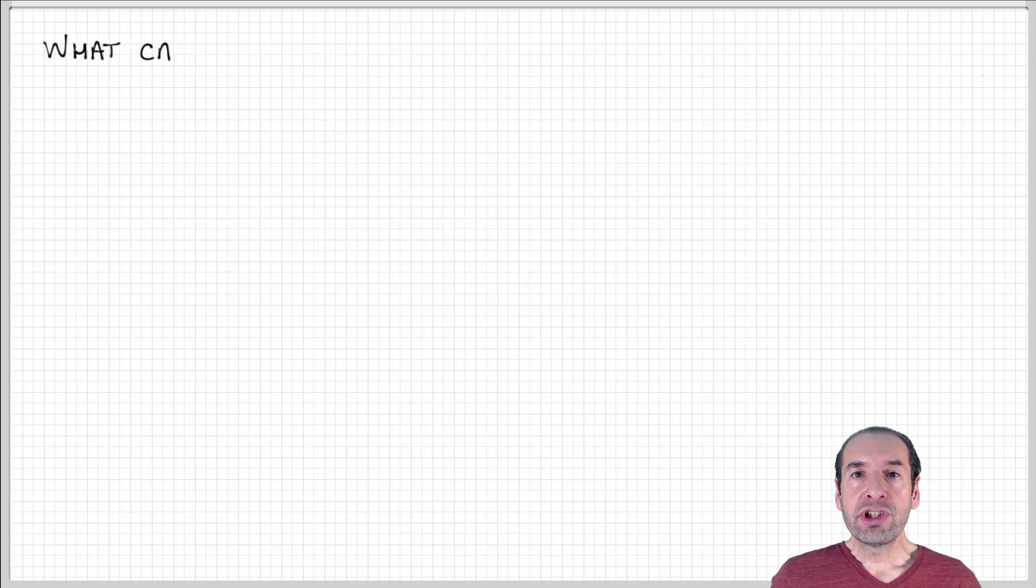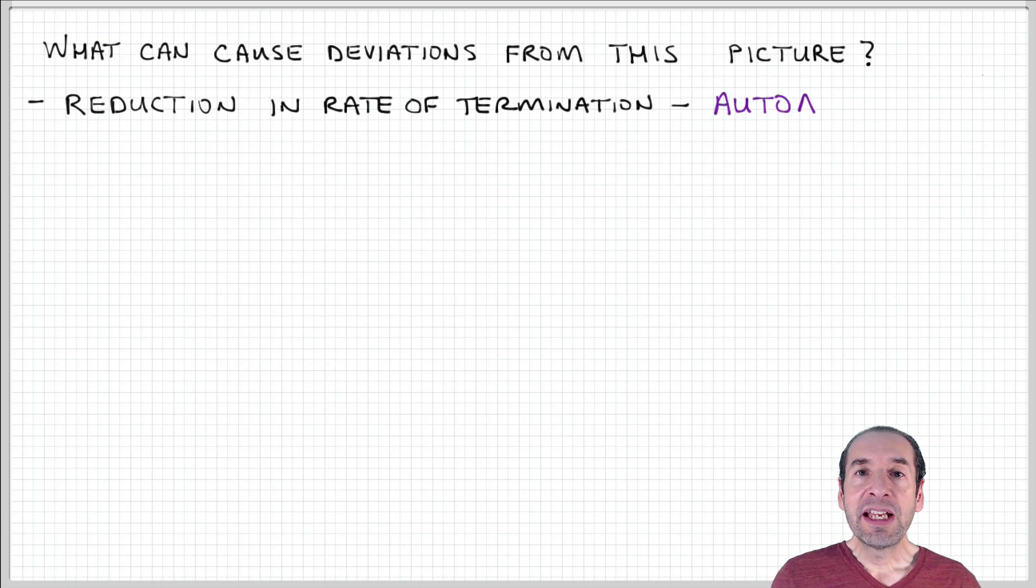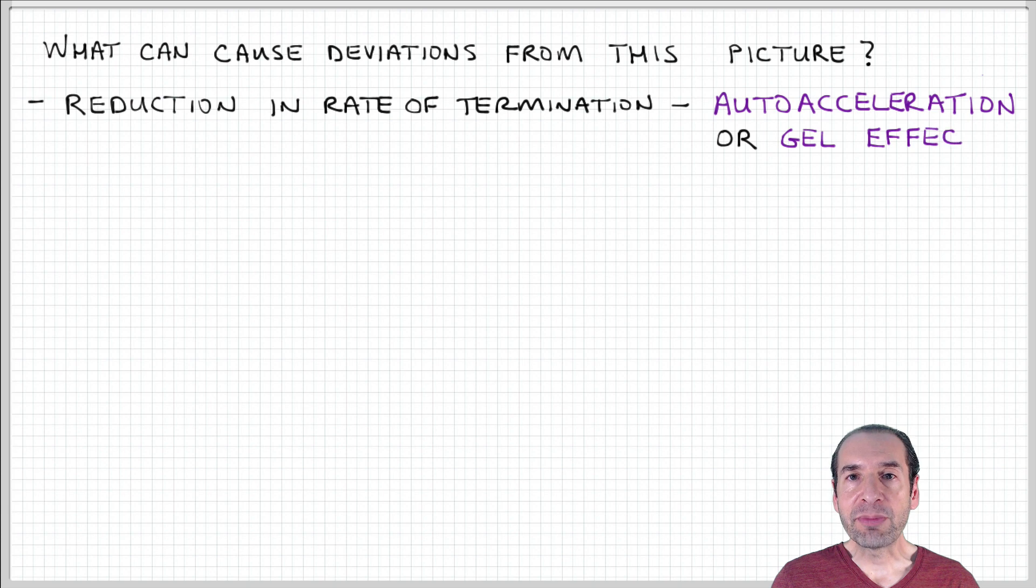I want to conclude just by pointing out a few limitations of this relatively simple framework that we've developed to describe the kinetics of free radical polymerization. One of these limitations deals with the nature of the termination process. Remember that this was important in the steady state assumption because we use that to equate the rates of initiation and termination, and that was an important step to obtain a simplified relationship for the overall rate of polymerization.